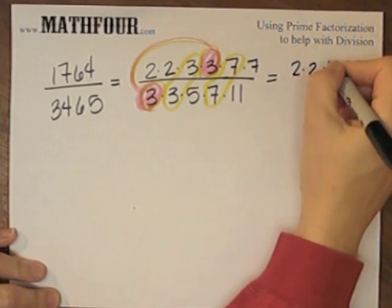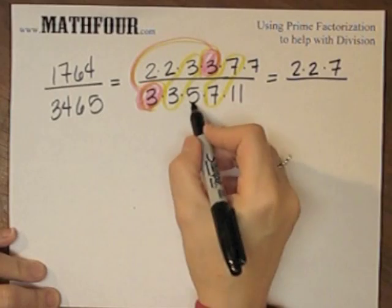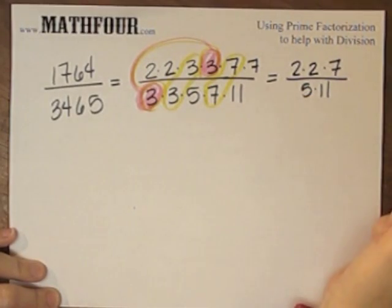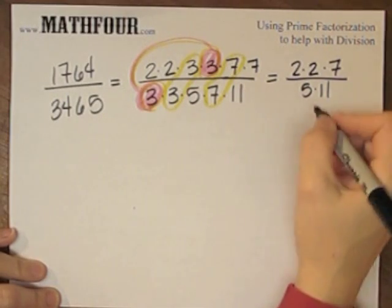So we have 2 times 2 times 7 on the top, and 5 times 11 on the bottom. So we're left with 28 over 55.